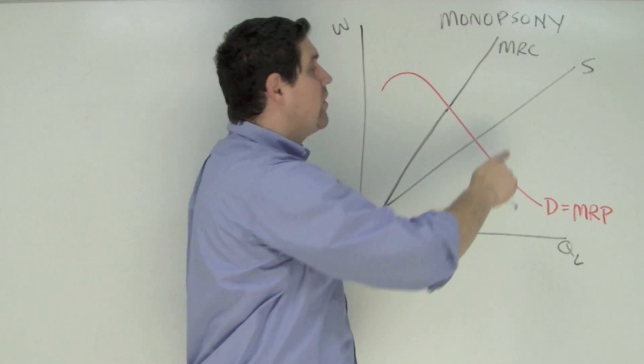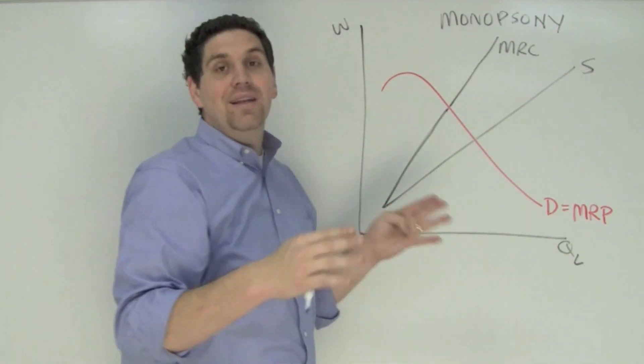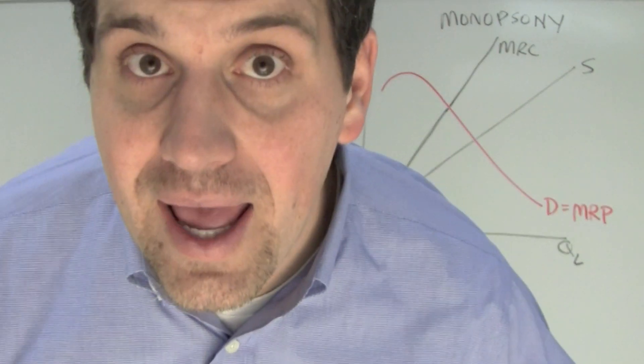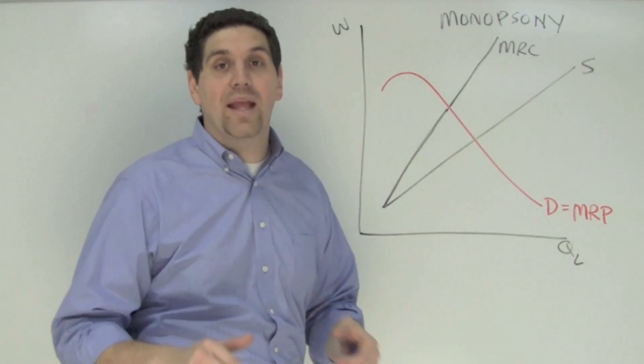Now notice the supply does not equal the marginal resource cost like it did back in a perfectly competitive labor market. Why? Because this monopsony cannot wage discriminate.